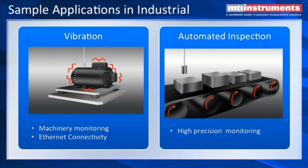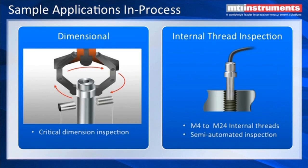We also do automated inspection where you're looking at high-precision dimensions of parts as they move by on an assembly line. We do critical dimension inspection on rotating objects, such as car camshafts and precision parts used in automobile engine construction.